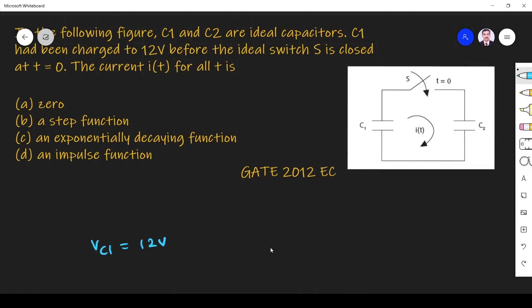Before the switch is closed. When the switch is closed, what happens when the switch is closed? This is 12 volt. Thus, it will not change voltage. What will happen to C2?